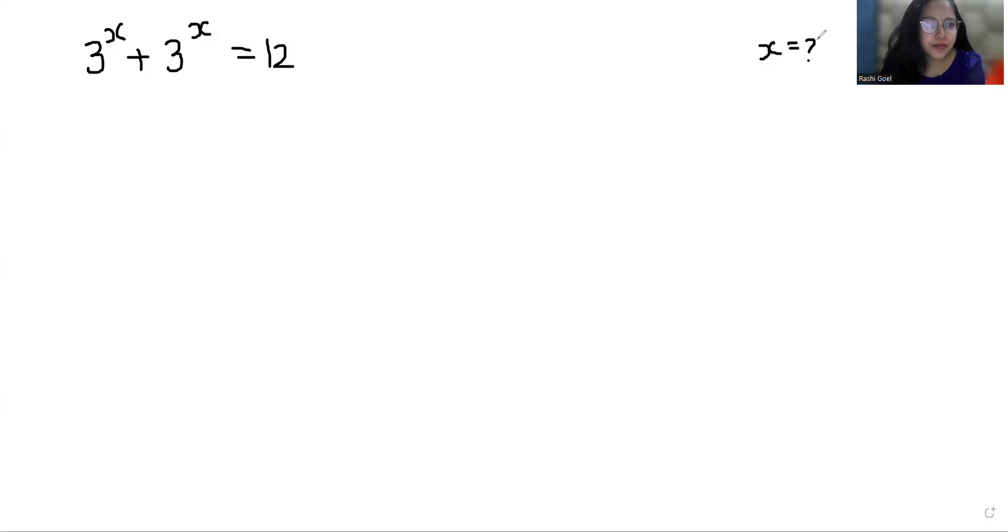First, from the left hand side I'm going to take 3^x as common, so what is left is 1 plus 1 equals 12. Now 3^x times 2 equals 12.